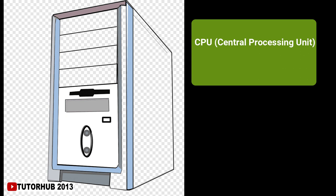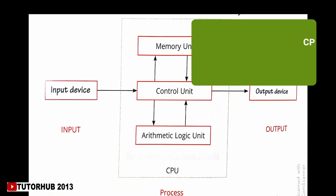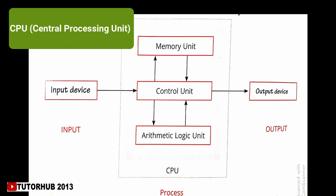The CPU consists of three main parts: the Control Unit, the Arithmetic Logic Unit, and the Memory Unit. The Control Unit controls the working of all parts of the computer — it acts like a supervisor and decides if a particular instruction will go to the Memory Unit, the Arithmetic Logic Unit, or an output device. The Arithmetic Logic Unit does all the calculations in a computer.